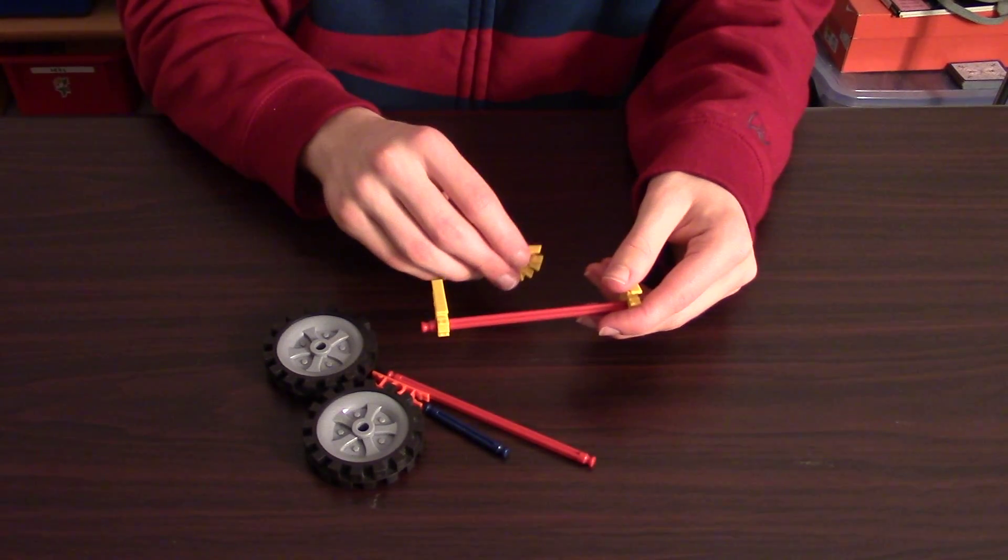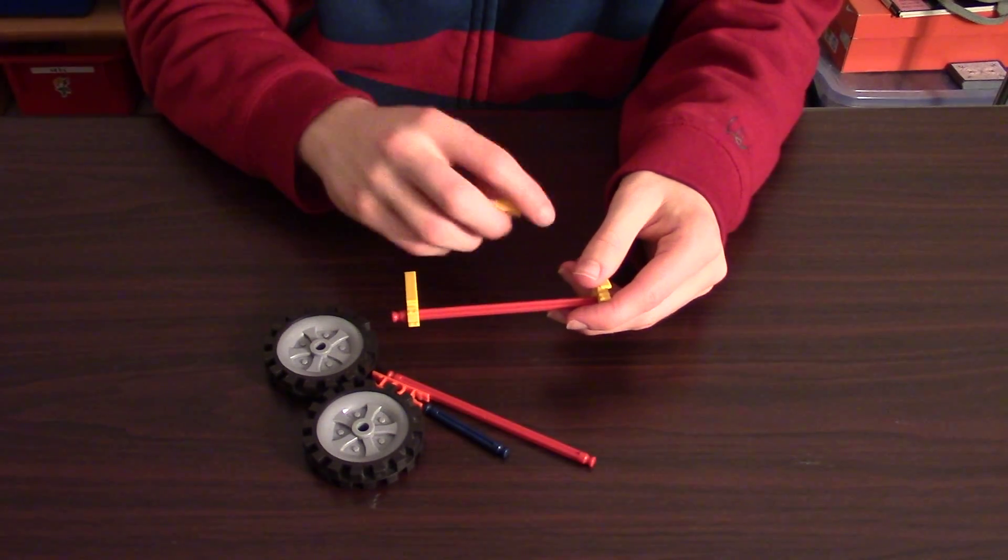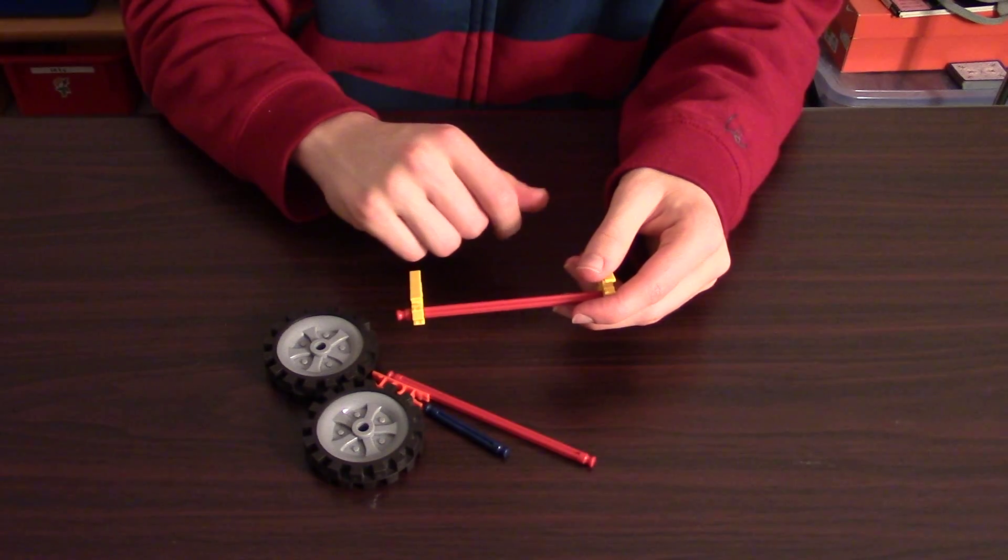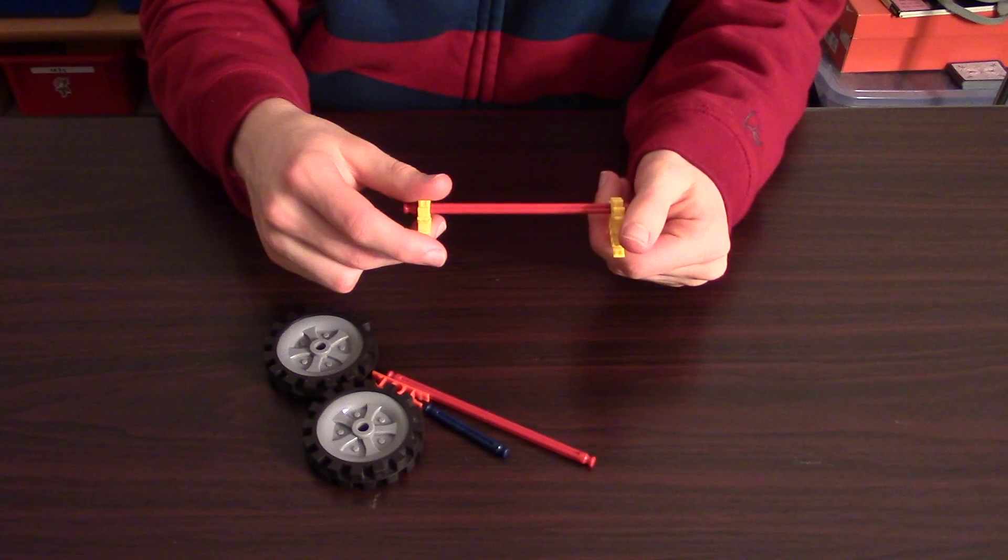Now here's something interesting, cool, and very helpful that you may not have known about Knex pieces. On the rods, especially the longer ones, like the red and the gray ones, there is usually a very faint circle that marks the center of the rod.